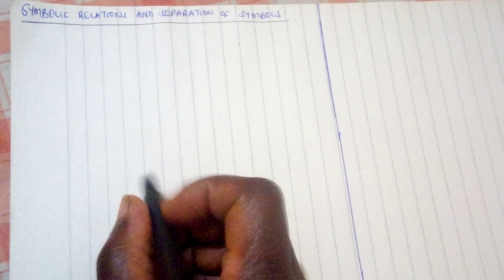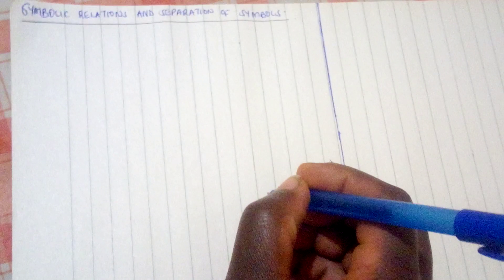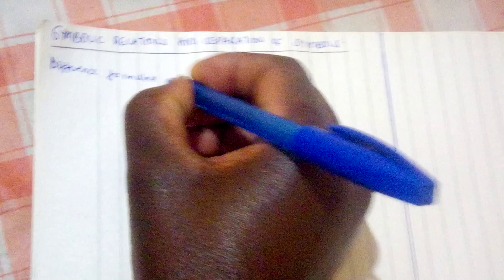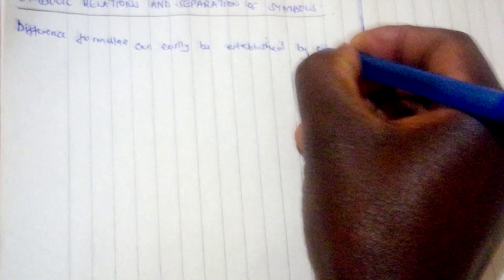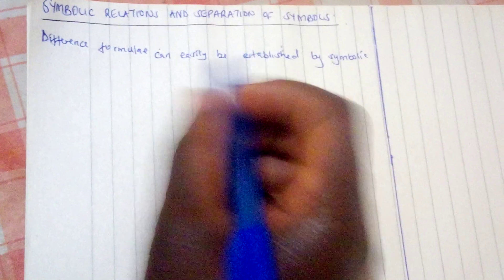Hey guys, welcome. Hope you are doing well. Today we are going to talk about symbolic relations and separation of symbols in numerical analysis. We are going to have a lot of writing as we explain what it means. We start by saying difference formulas can easily be established by symbolic methods.